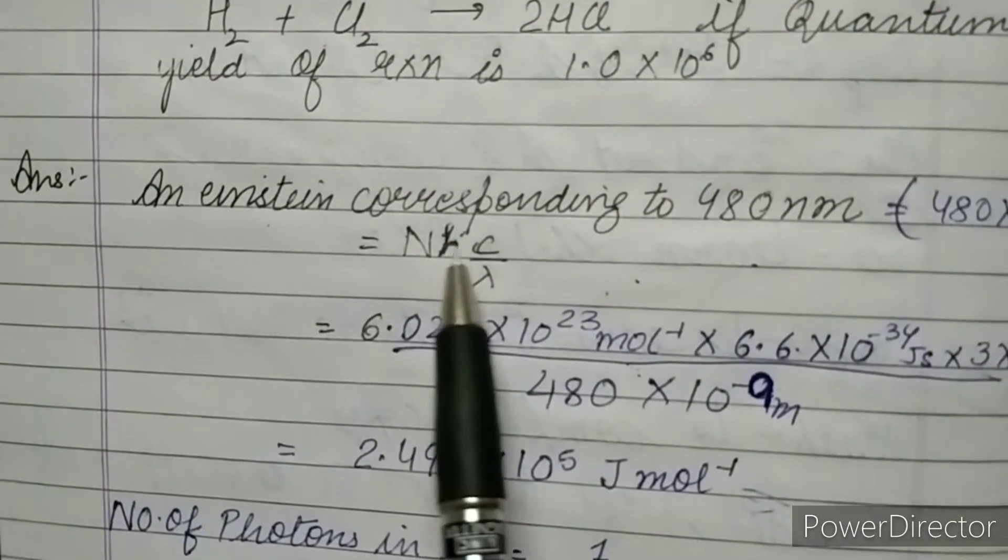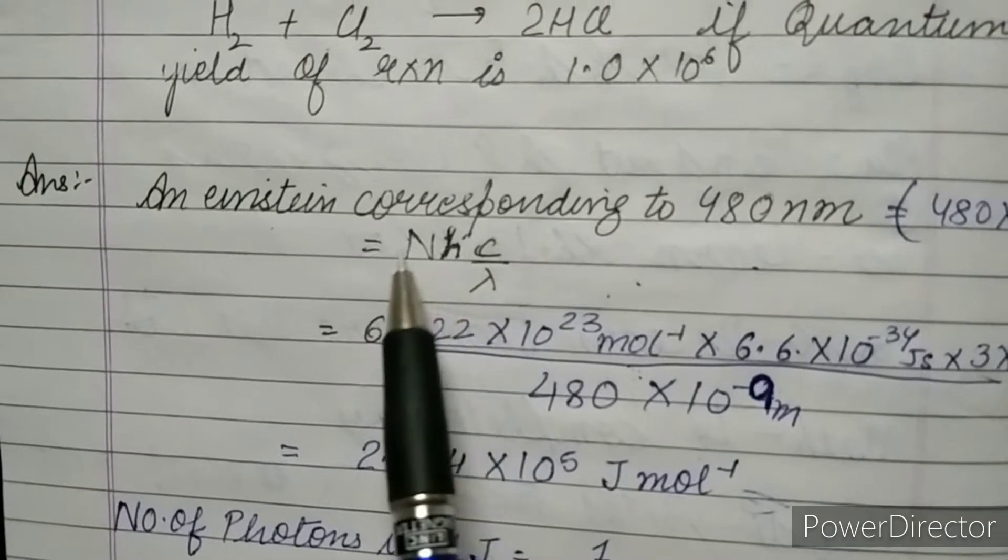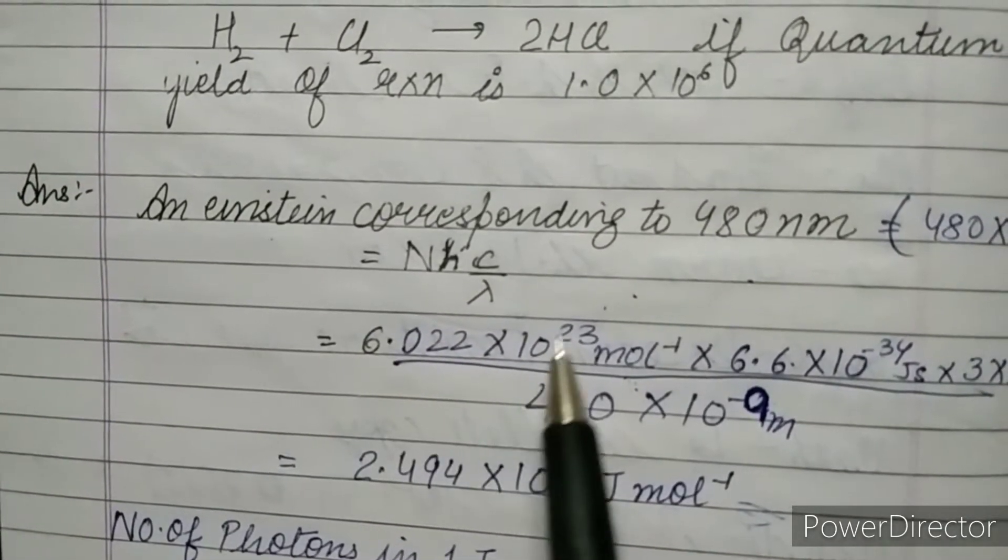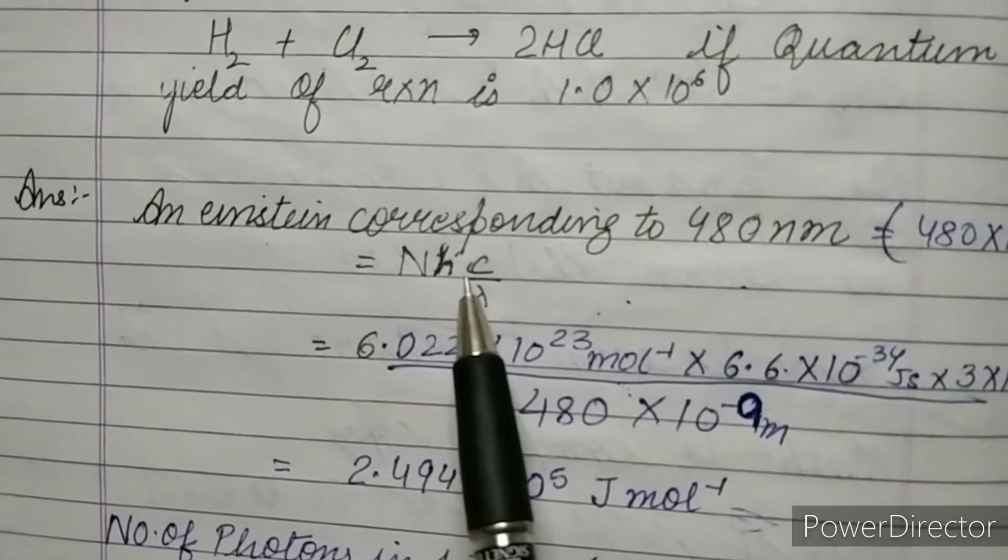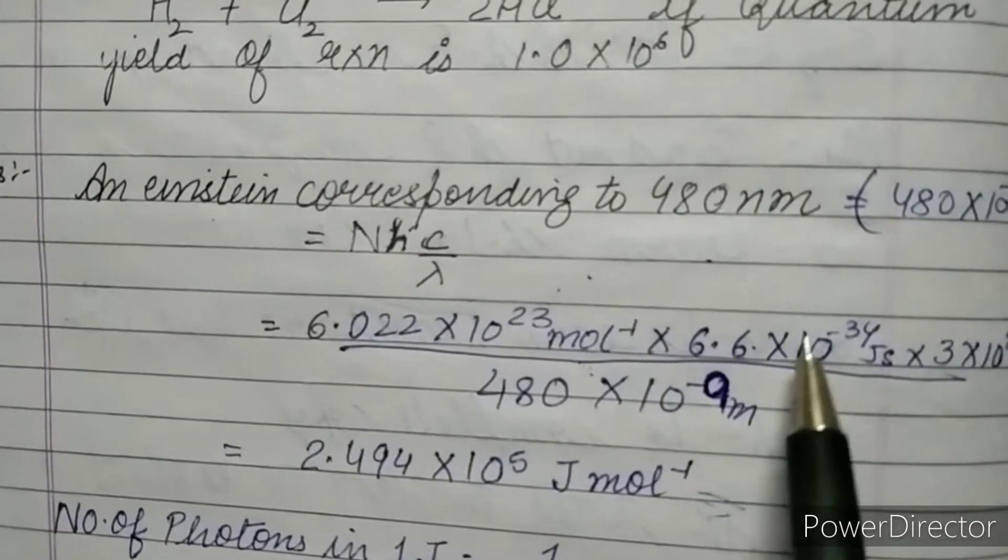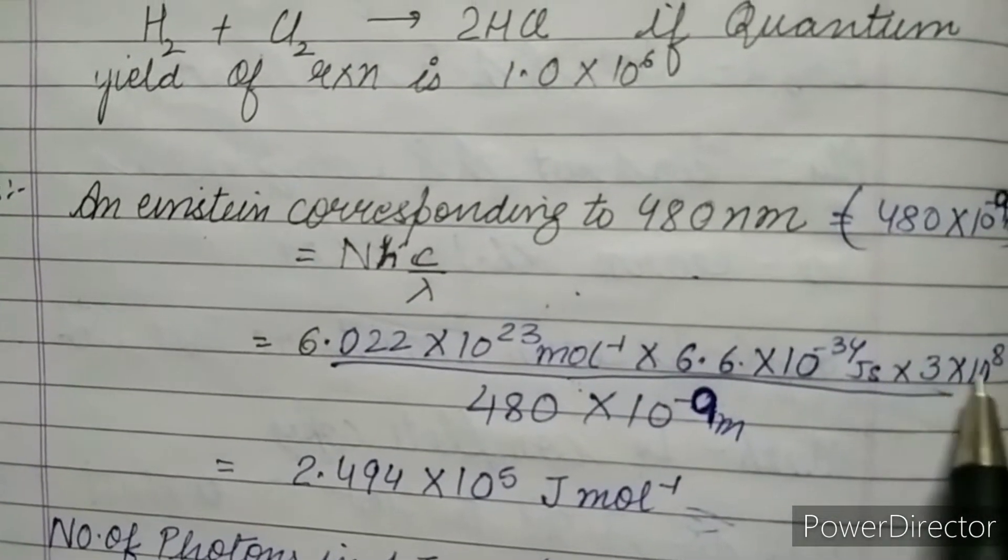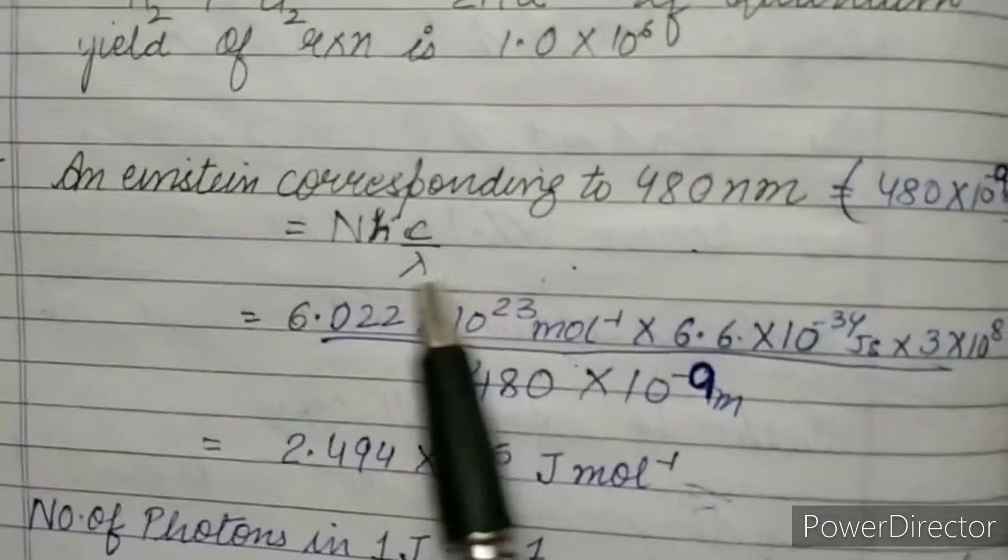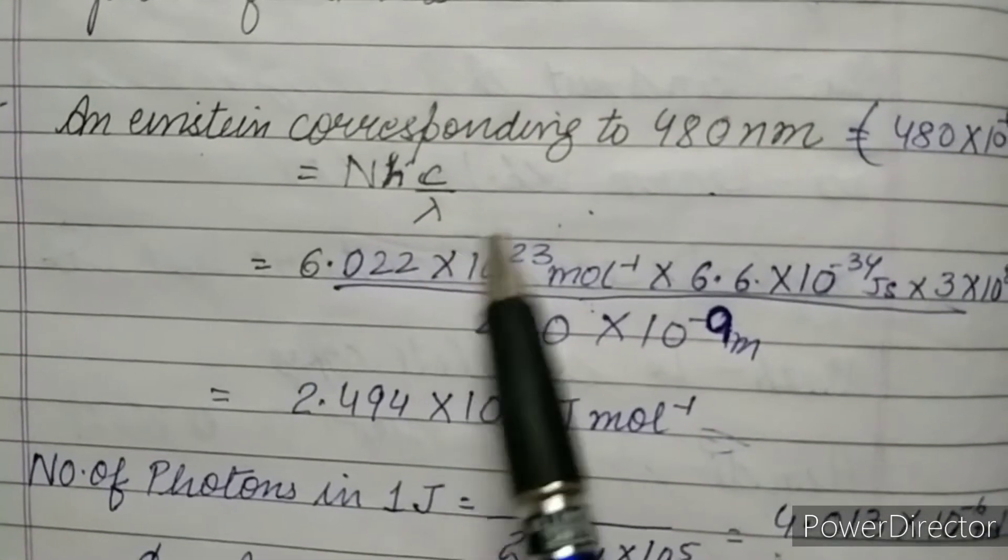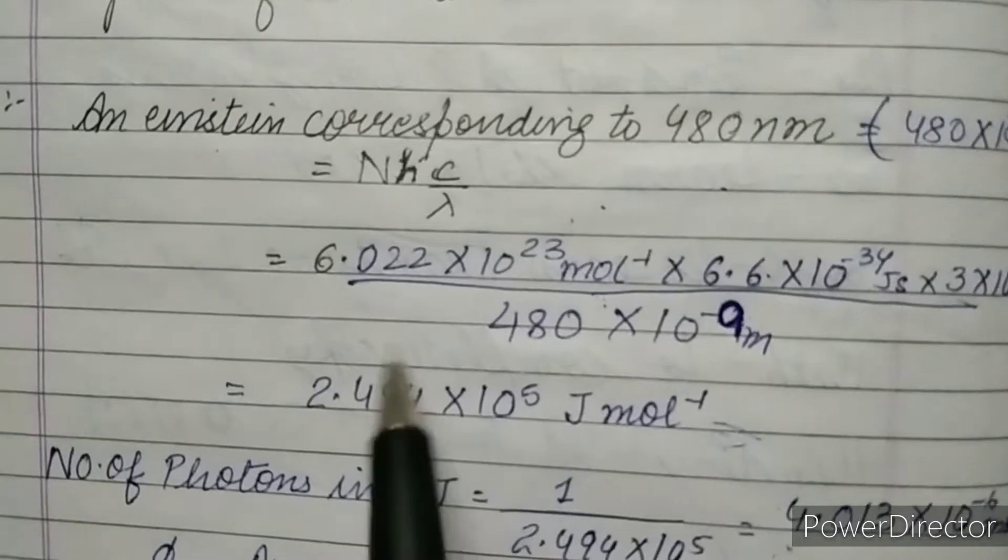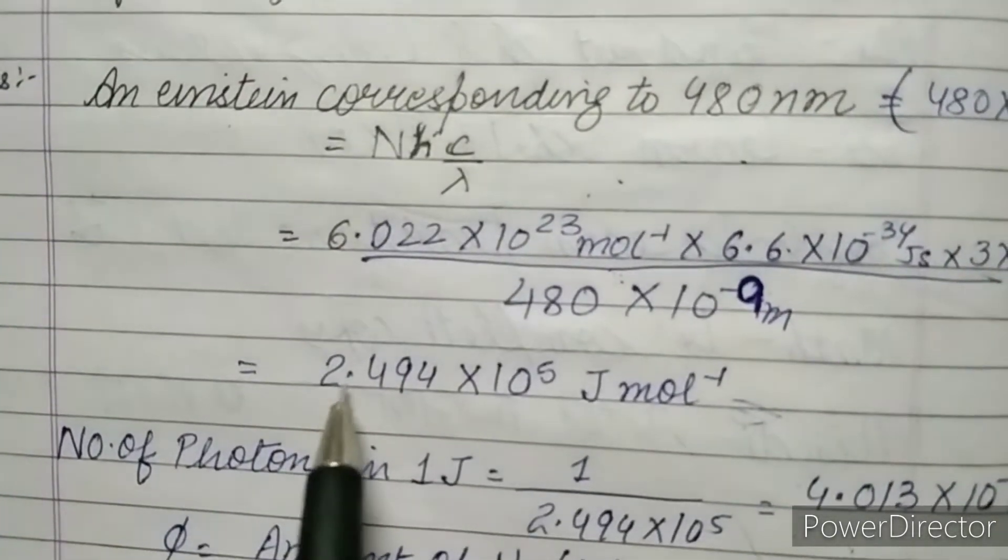Where N is Avogadro's number and the value is 6.022 × 10²³, and H is the Planck constant which is 6.6 × 10⁻³⁴, C is the velocity of light which is 3 × 10⁸ meter per second, and lambda is wavelength, that is 480 × 10⁻⁹ meter.